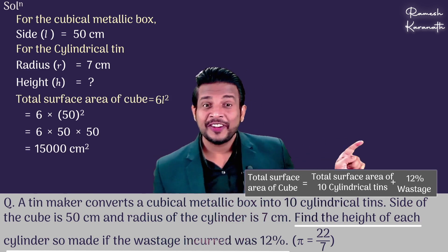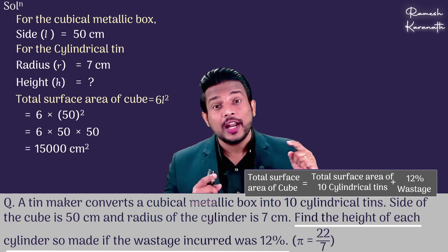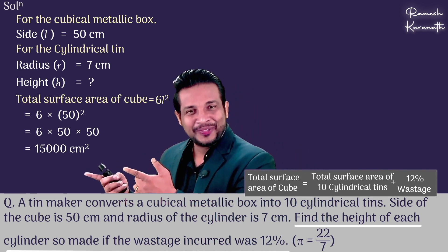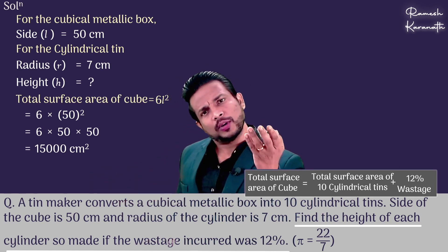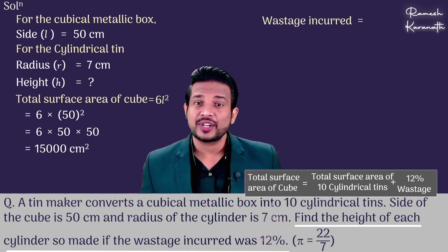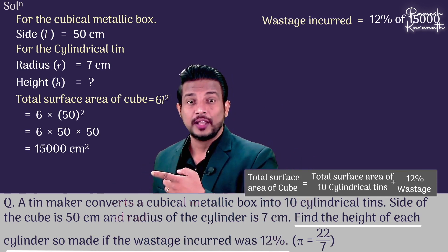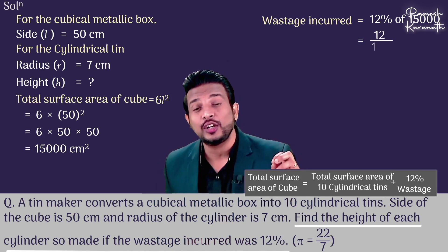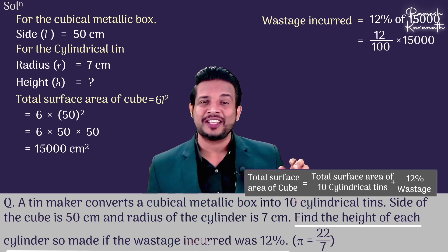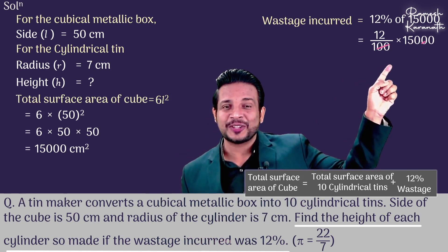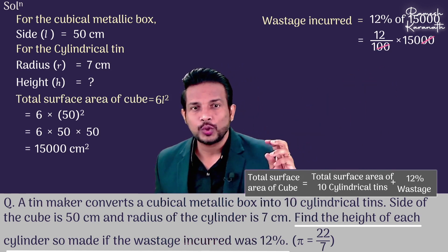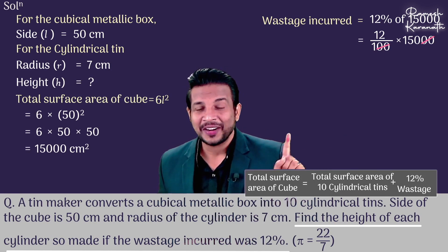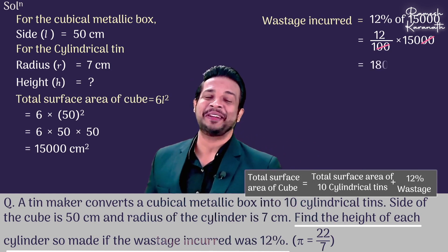Now, what is the wastage? The wastage is 12% of the total surface area. So wastage = 12/100 × 15,000. Cancelling two zeros: 12 × 150 = 12 × 15 × 10 = 180 × 10 = 1,800. Therefore, the wastage is 1,800 cm².